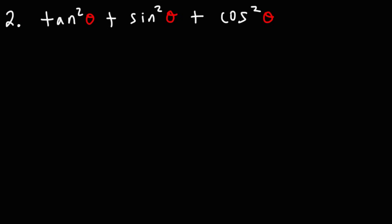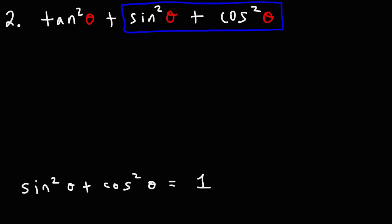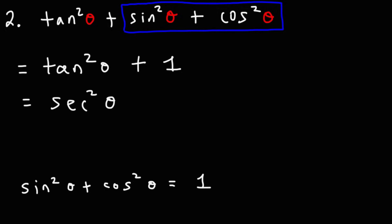Now let's try this one: tangent squared theta plus sine squared theta plus cosine squared theta — go ahead and simplify this expression. Recall one of the Pythagorean identities: sine squared plus cosine squared is equal to 1. So we replace that part with 1, giving us tangent squared theta plus 1. And since 1 plus tangent squared equals secant squared, this entire expression is equivalent to secant squared theta.